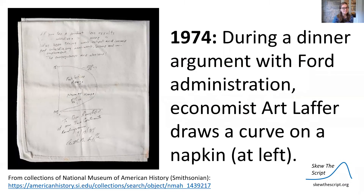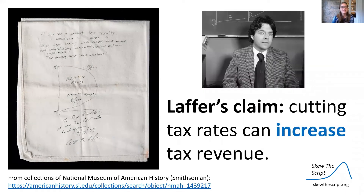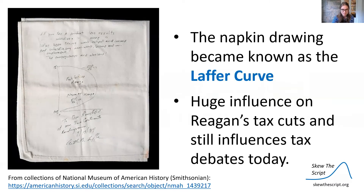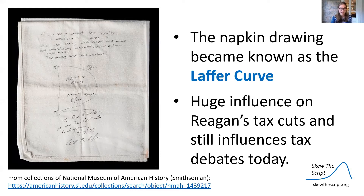In 1974, during a dinner argument with the Ford administration, economist Art Laffer drew a curve on a napkin — you can see the napkin and the curve at the left. His claim was that cutting tax rates can increase tax revenue. The napkin drawing became known as the Laffer curve, and it had a huge influence on President Ronald Reagan's tax cuts and still influences tax debates today.